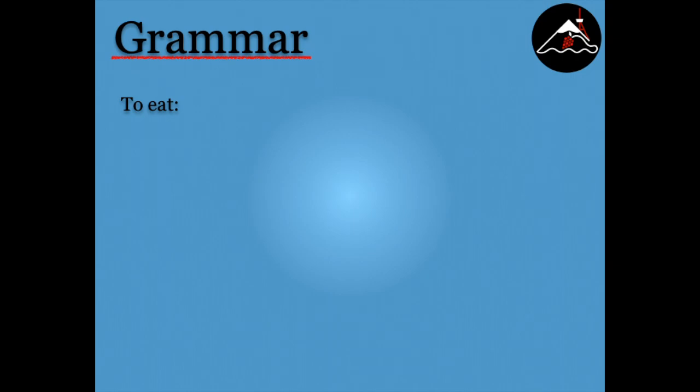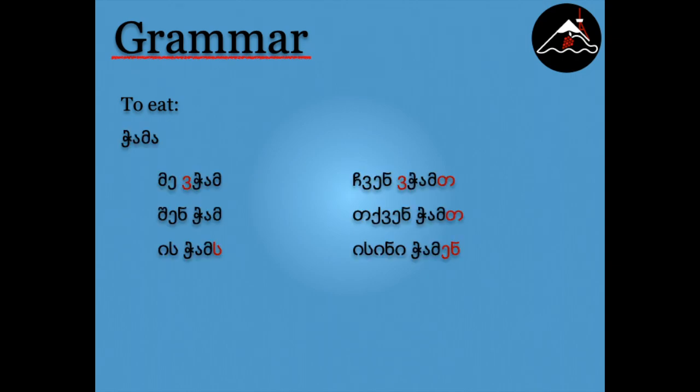Now, let's conjugate the verb eat. The gerund eating is chama. Mē fcham. Shen cham. Is chams. Chwen fchamd. Tkwen chamd. Is ni chaman.